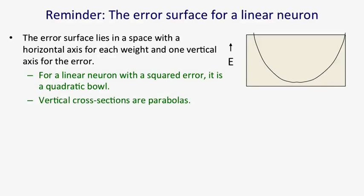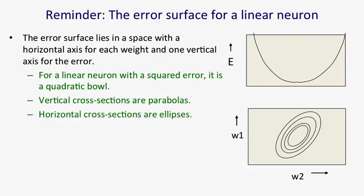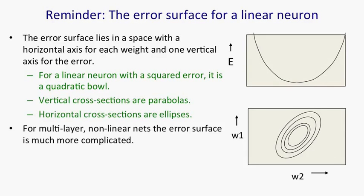The vertical cross-sections are parabolas, and the horizontal cross-sections are ellipses. For multi-layer non-linear nets, the error surface is much more complicated.